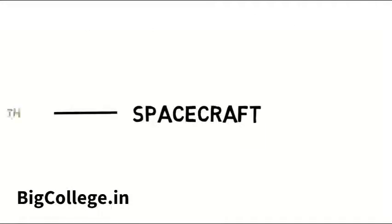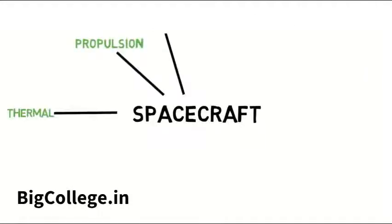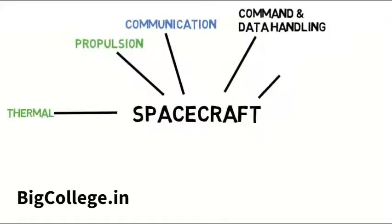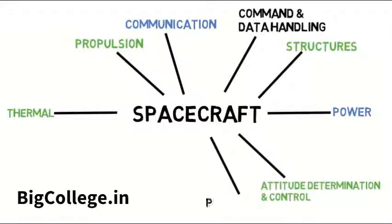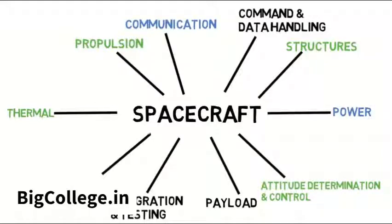To summarize everything so far, a spacecraft is comprised of many subsystems and components that need experts in each one of those fields. The ones in green are what undergrad will focus on the most. Some schools may briefly go into communication and power, which is why they're in blue, but not all schools will — and if those interest you, then electrical engineering will be better for you. Systems engineers have to know a little about all these subsystems, which is kind of what school prepares you for.